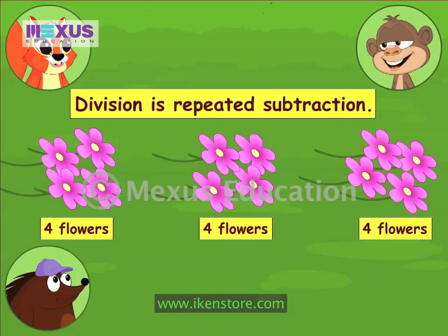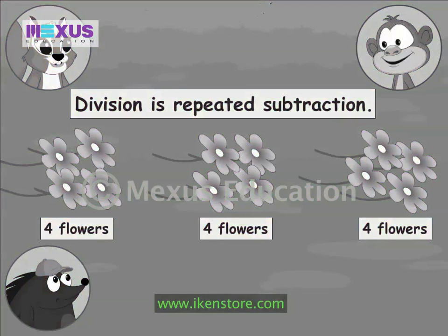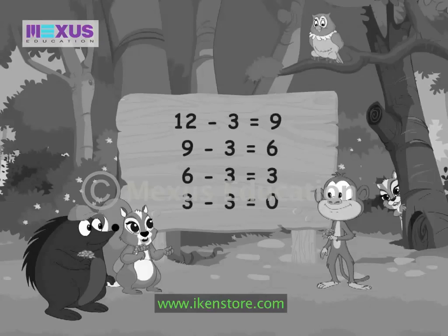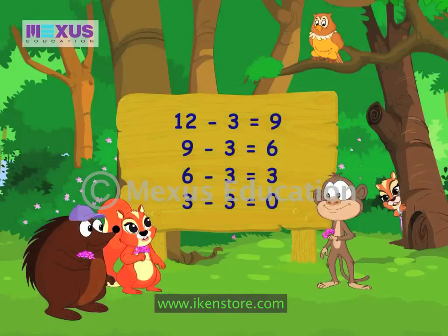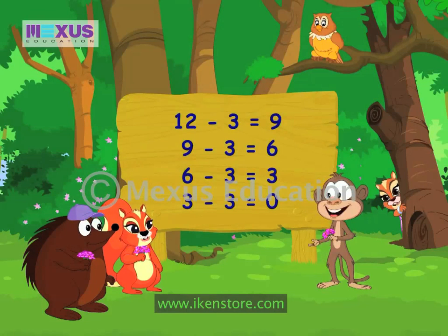Mummy says division is repeated subtraction. Yes. We could have found out how many flowers each gets by simply subtracting three from twelve four times. Here is how we could have done it. I understand division now.